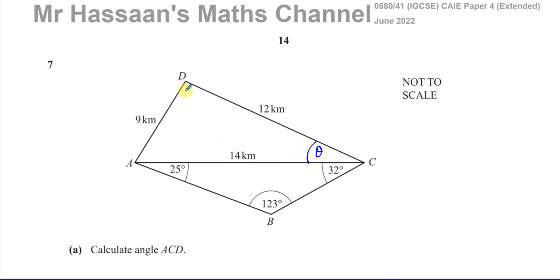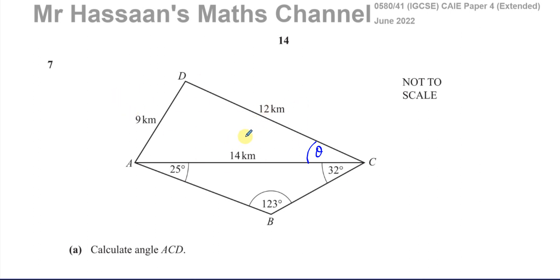It's not a right-angle triangle. You cannot say it looks like one, because these diagrams are not to scale. You cannot assume anything is a right angle unless you know for sure. So what we've got to do is use the trigonometry for non-right-angle triangles.